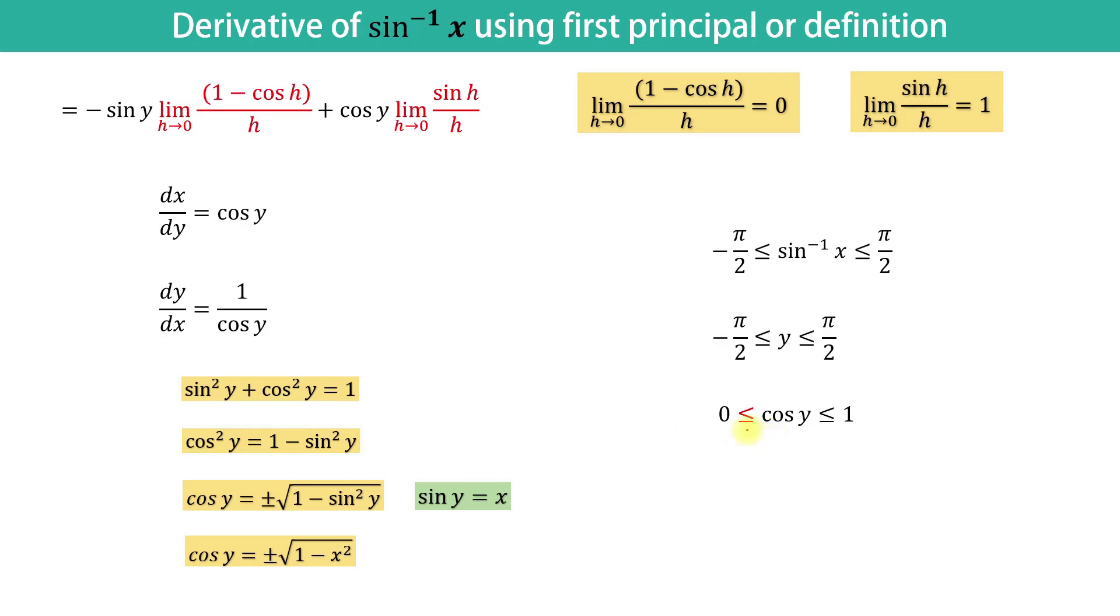Now we will remove the equality and cos y is greater than 0 and less than or equal to 1. By this inequality, we can clearly say that cos y is a positive quantity.